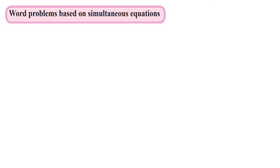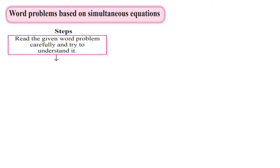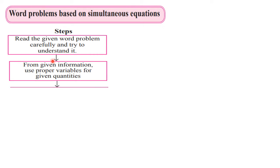Now while solving the word problems we have to follow certain steps. The very first step is: read the given word problem. If you don't understand it, read it again — read it twice. You have to carefully read the word problem and try to understand it. The second step is that from the given information you have to use proper variables for given quantities. There will be two unknown quantities.